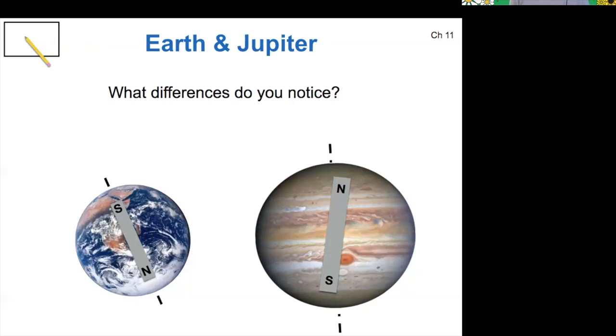The first thing you notice is that for Earth, the south magnetic pole is at the north geographic pole. But for Jupiter, the north magnetic pole is at the north geographic pole. So the magnetic fields are flipped in terms of their polarity.